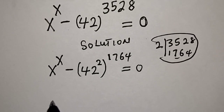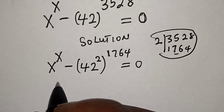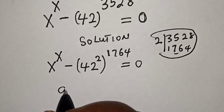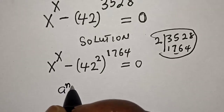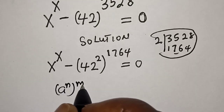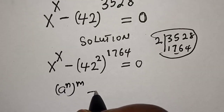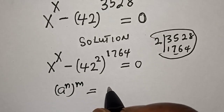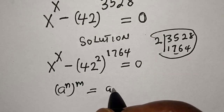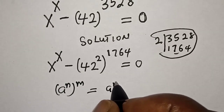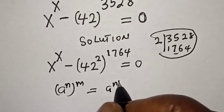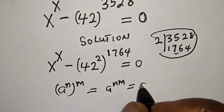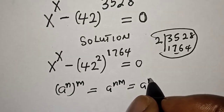Remember this rule: a raised to power n, raised to power m, is equal to a raised to power n times m.